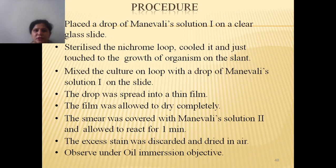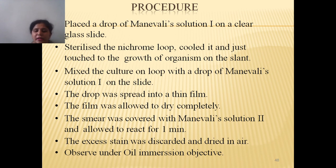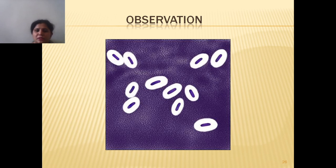Procedure: place a drop of nigrosin solution on a clear glass slide. Using a sterilized inoculation loop, touch it to the growth of microorganism on the slide and mix with the drop of nigrosin solution. Spread the drop into a thin film and allow the film to dry completely. Cover the smear with nigrosin solution and allow it to react for one minute. Discard the excess stain and air dry. Under oil immersion objective you can observe the cells with the capsule visible.